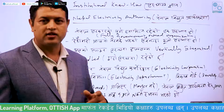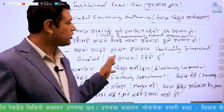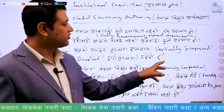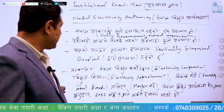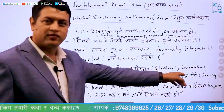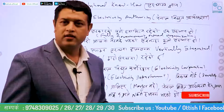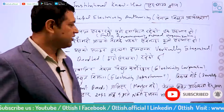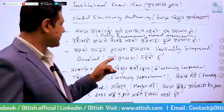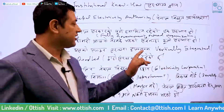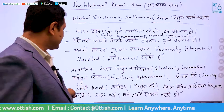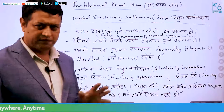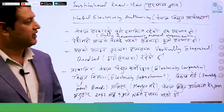That organization handles generation, transmission, and distribution. It is named Nepal Vidyut Pradhikaran — Nepal Electricity Authority — and it was established under the Nepal Electricity Authority Act, Vikram Samvat 2041. This is the impact and history of Nepal Vidyut Pradhikaran.